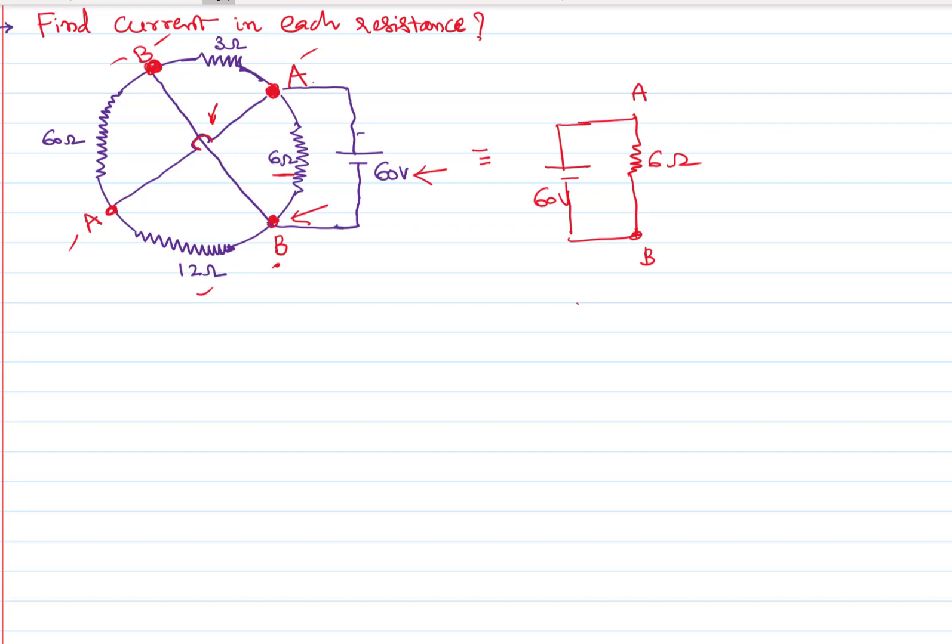Now I will draw this diagram - this 3 ohms that is also between the points A and B, so there is no resistance here. This resistance is 3 ohms. This is also between the same points A and B.